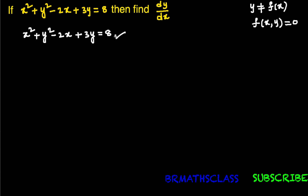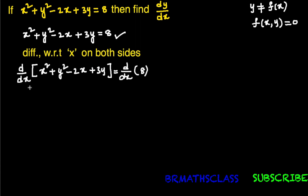Once you identify that the given equation is an implicit function, you differentiate the complete equation with respect to x on both sides. We write d/dx on both sides of the given equation, which represents that we are differentiating with respect to x.